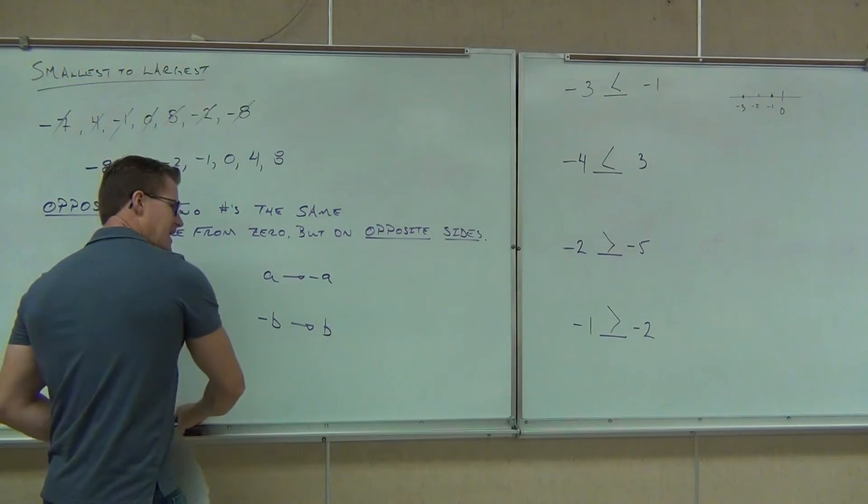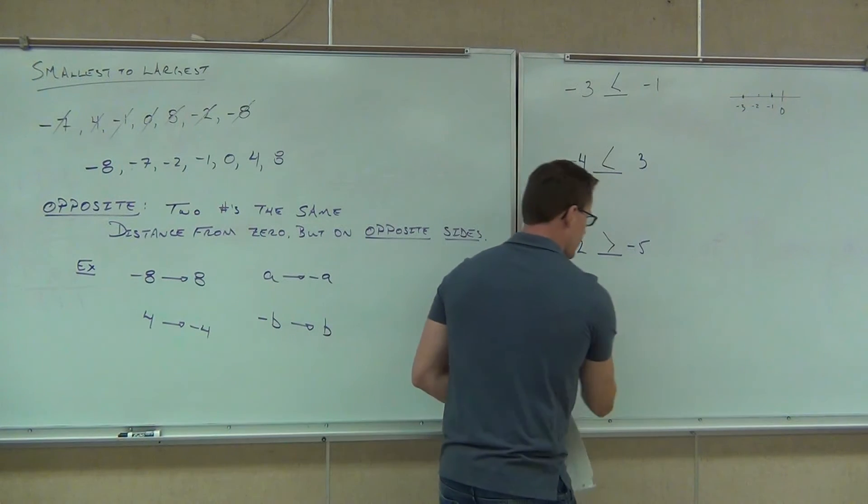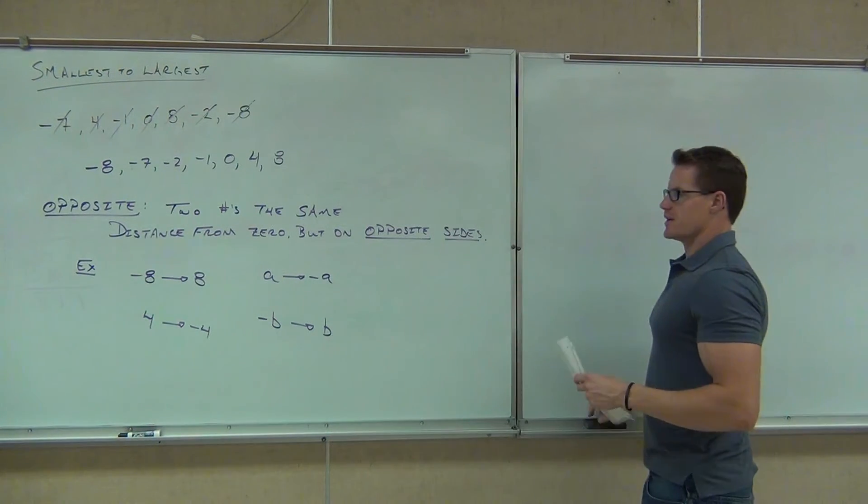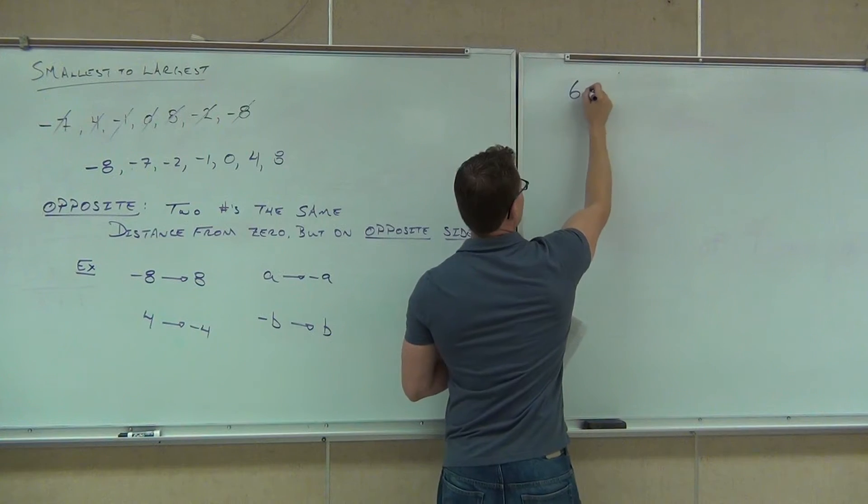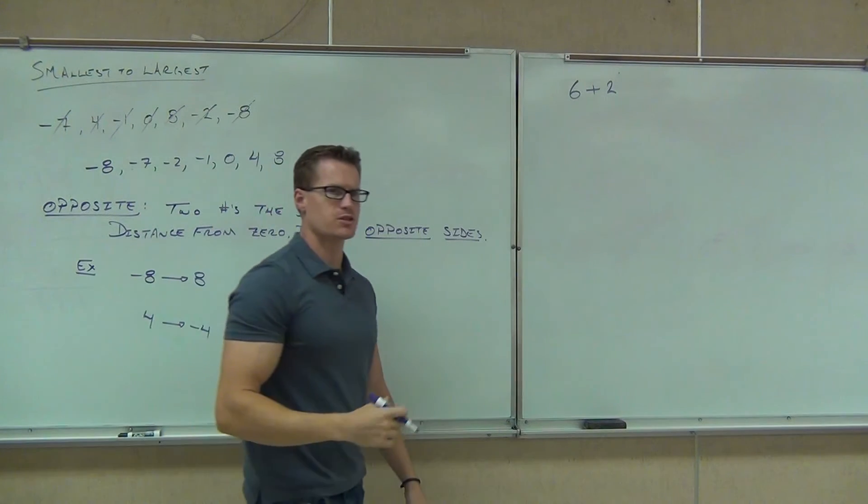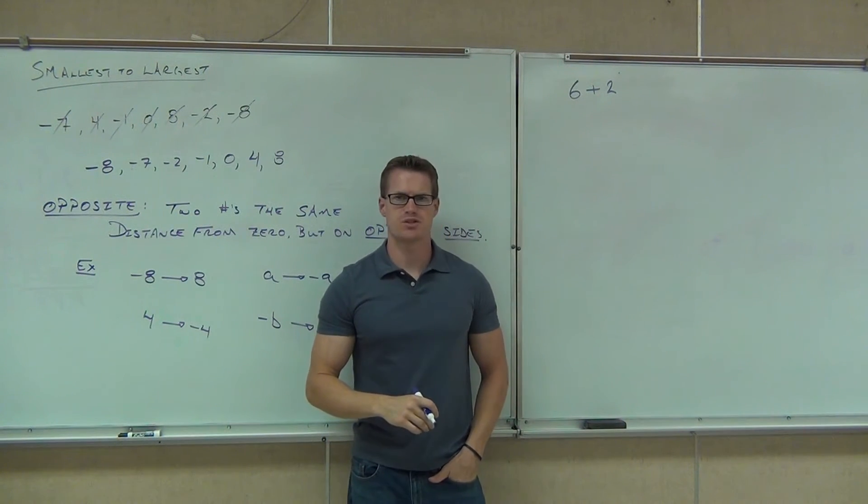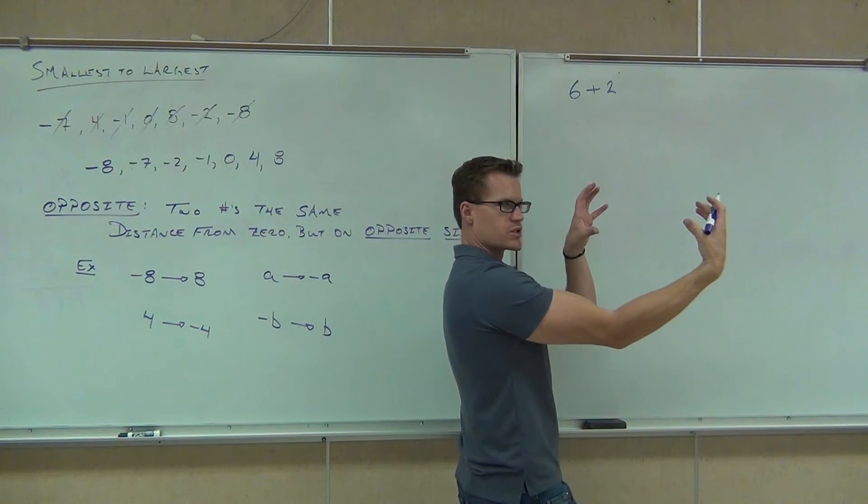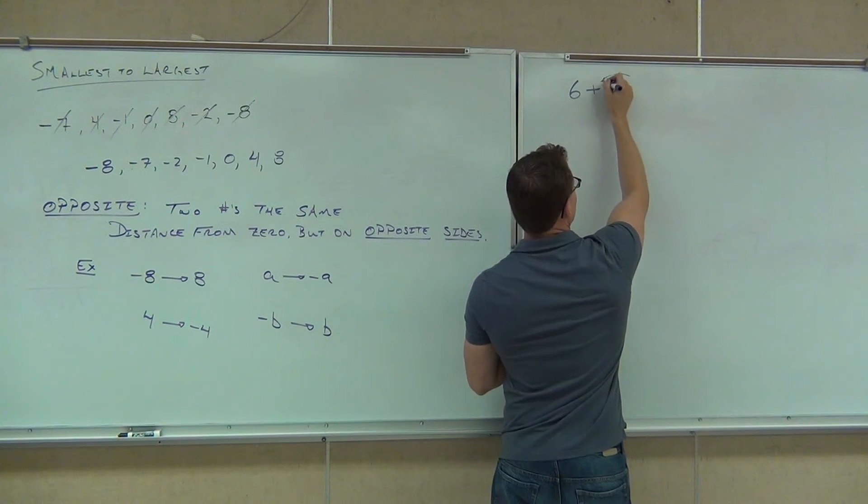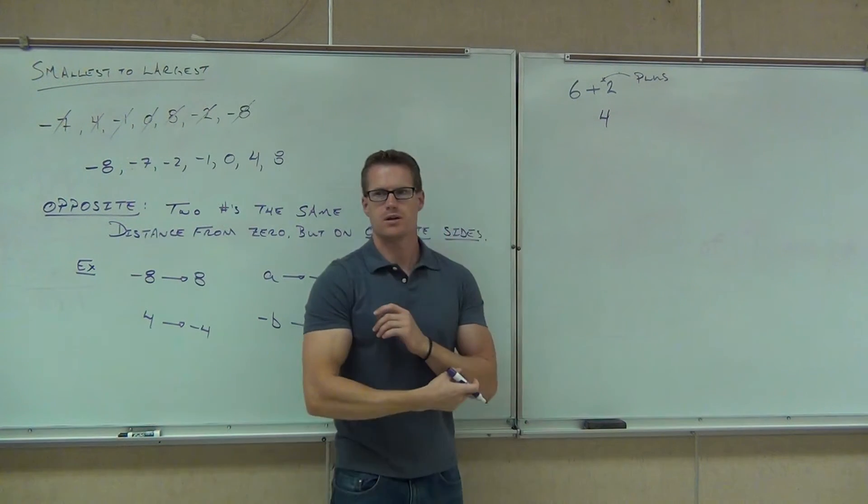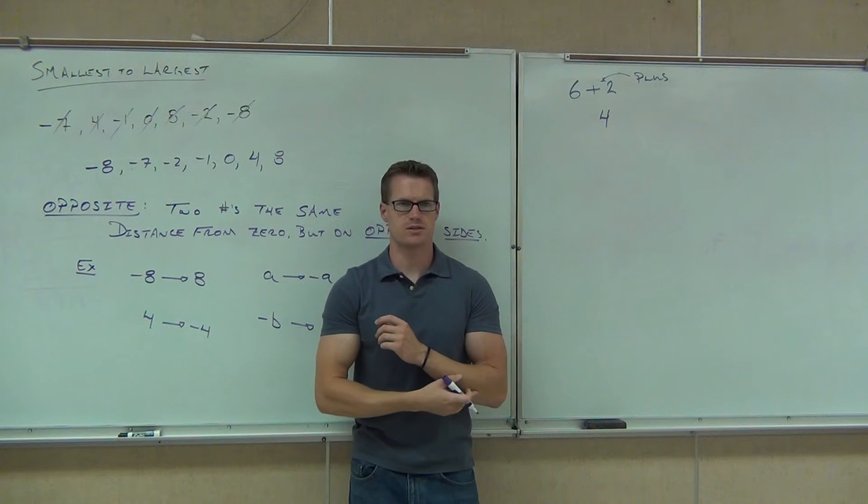One more thing I need to cover with you is how to say some of these things because we use this symbol in two different contexts. If I were to write 6 + 2 and ask you what that plus meant, how would you say that? Would you say plus or positive? You'd say six plus two. You wouldn't say six positive two. When we have something in conjunction with two numbers, when it's an expression, we use the word plus.